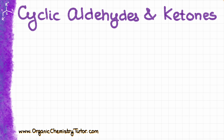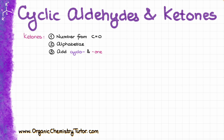Now, when it comes to the nomenclature of cyclic aldehydes and ketones, there is a huge difference in how we are going to be approaching those. With ketones, it's pretty straightforward. We number the cycle from the carbon where the ketone is located to give the lowest possible locants to the rest of the substituents or other functional groups if we have any. We are going to alphabetize everything and then put it all together. For instance, here I have 2,2-dimethylcyclohexanone, so nothing unexpected.